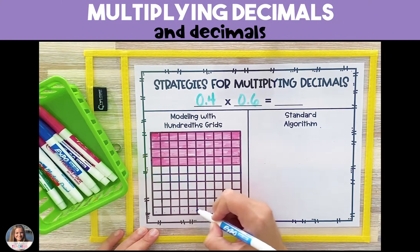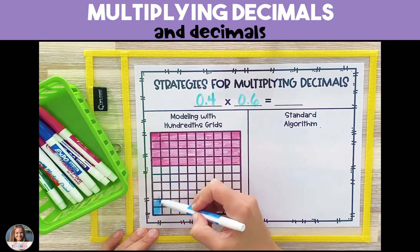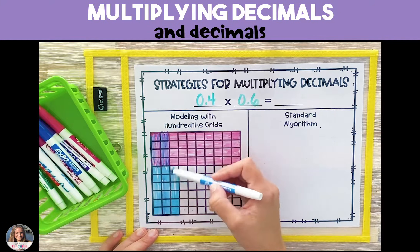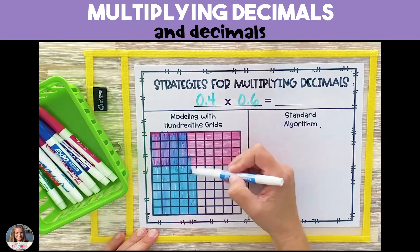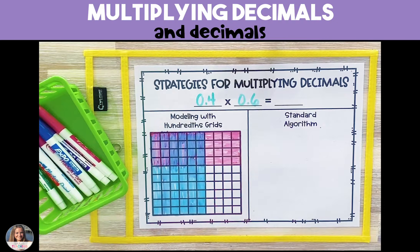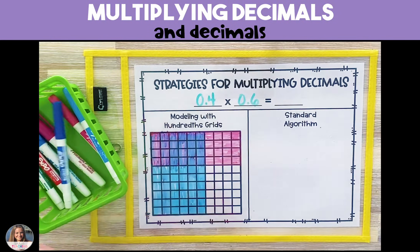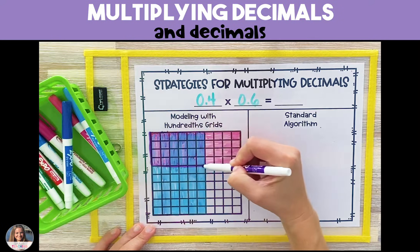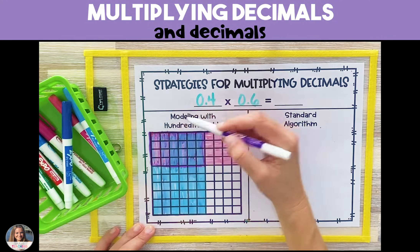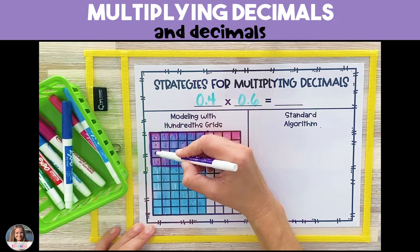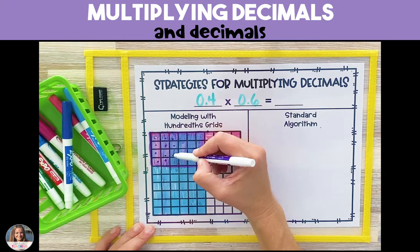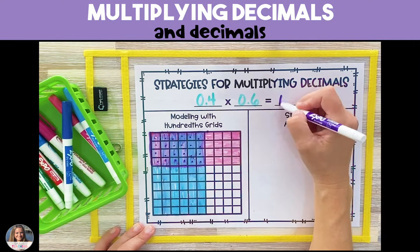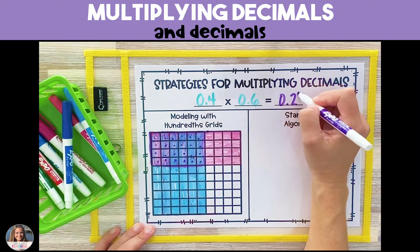To represent six tenths we're going to shade six columns vertically, shading them all the way up and down. Once all of the columns are shaded we're going to look at the area where both colors overlap — that is where we're going to find our product. Since there are 24 squares in the overlapped area, the product of four tenths and six tenths is 24 hundredths.